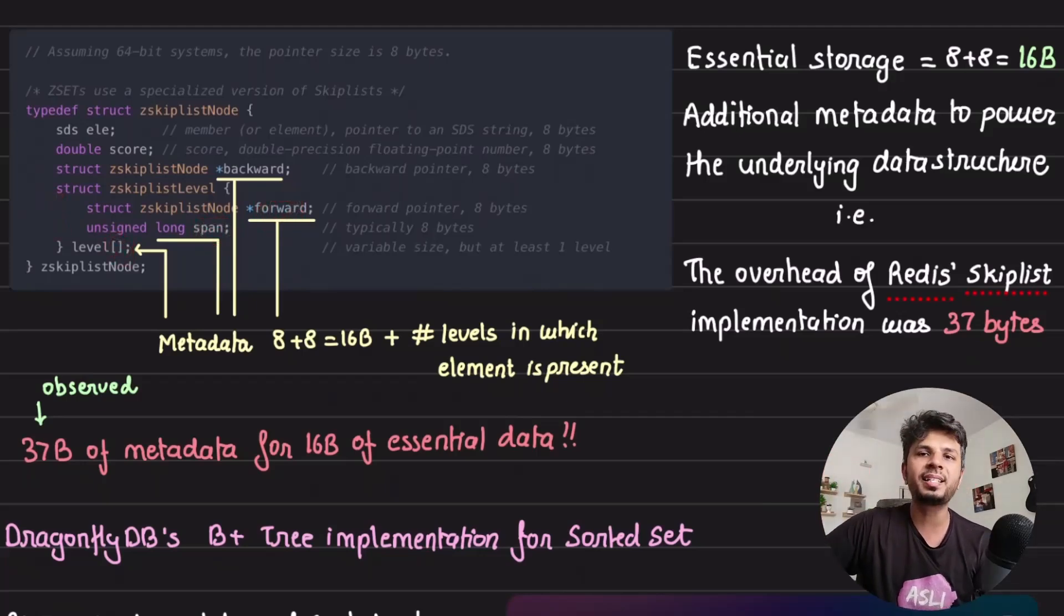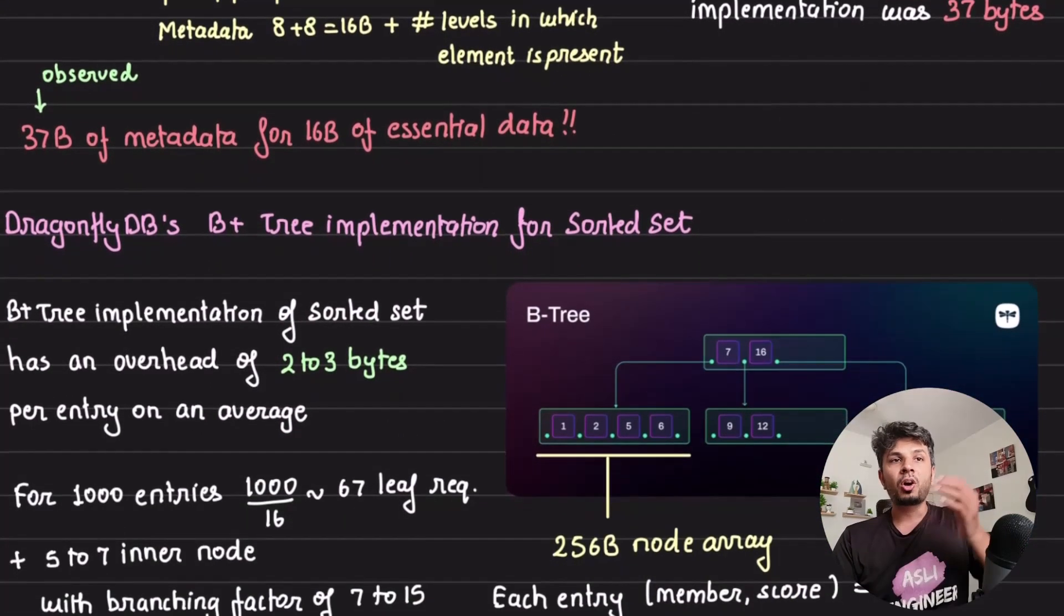If you do a simple benchmark, it turns out that the overhead of implementing your sorted set with skip list is 37 bytes. This is observed by running an experiment.